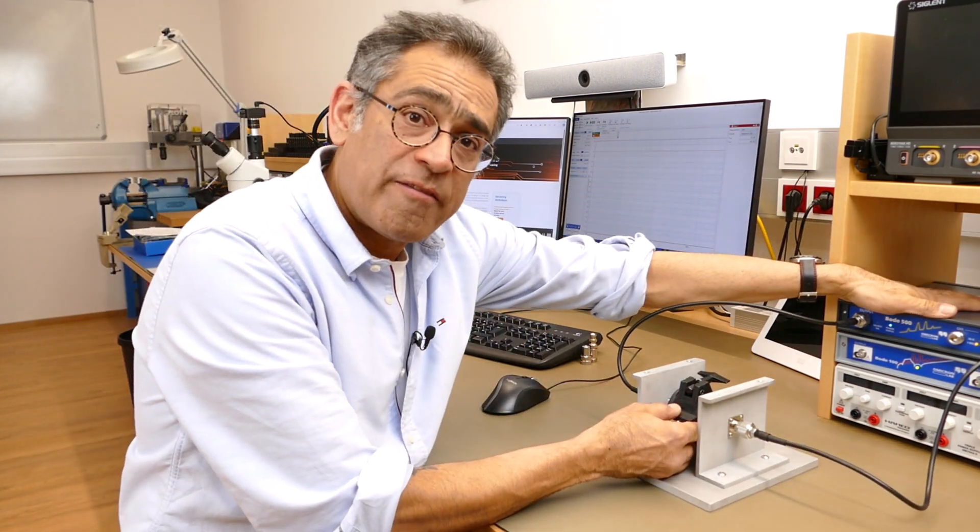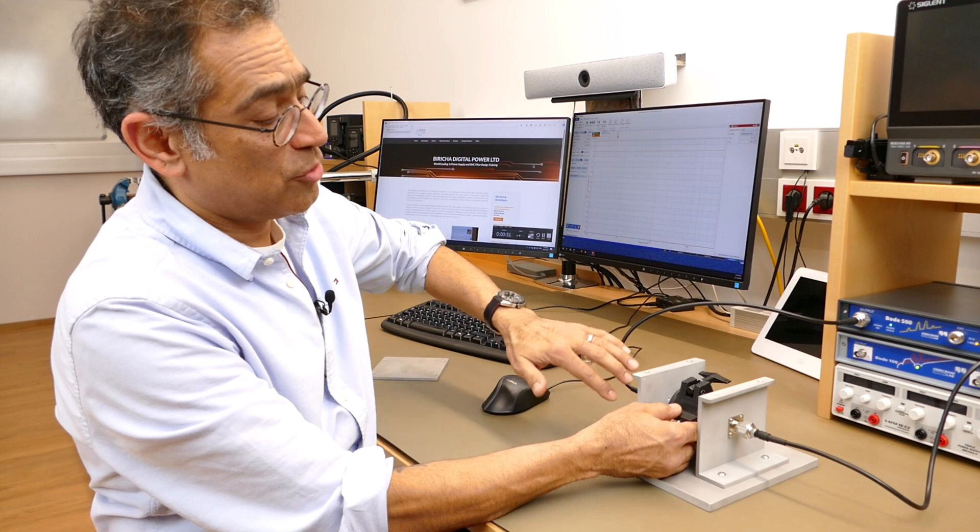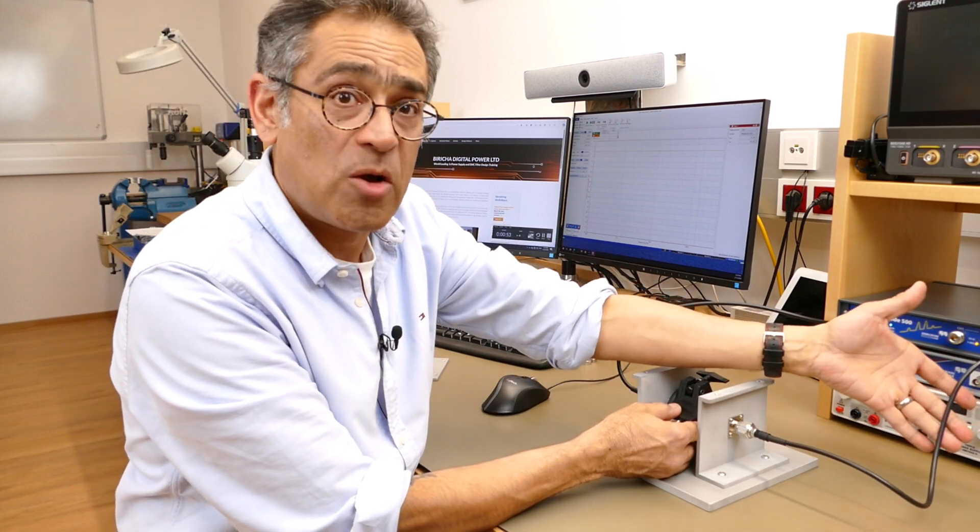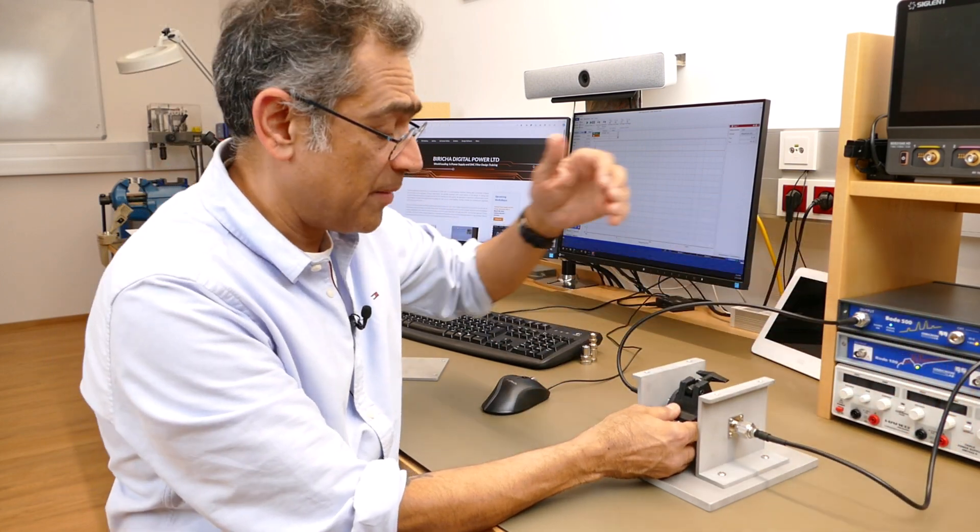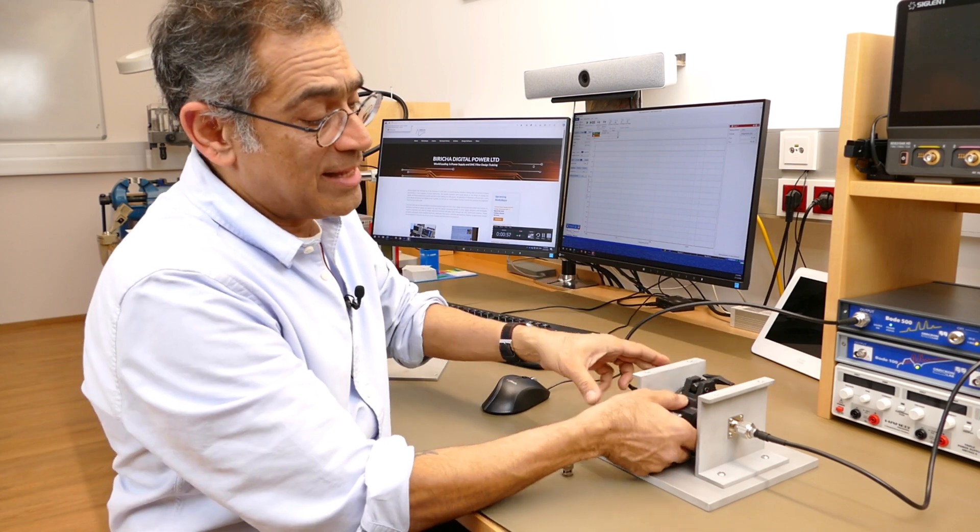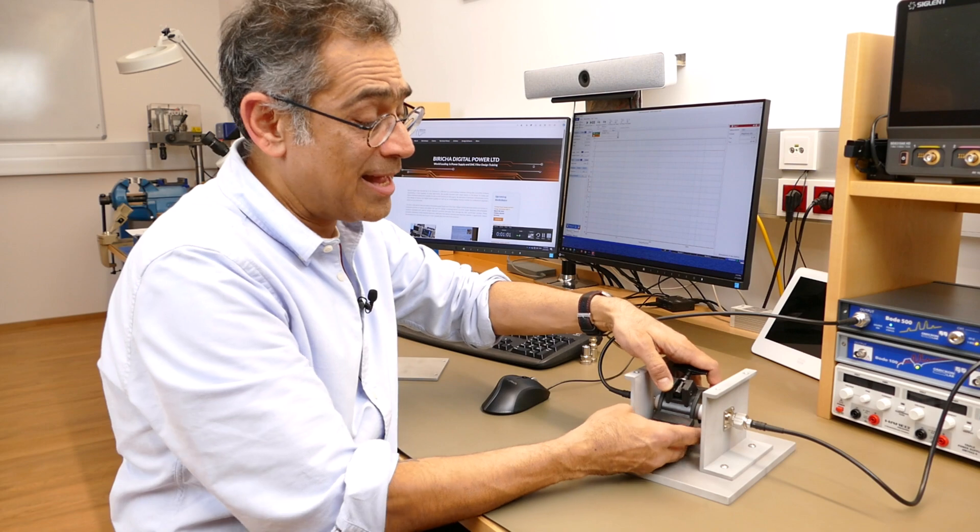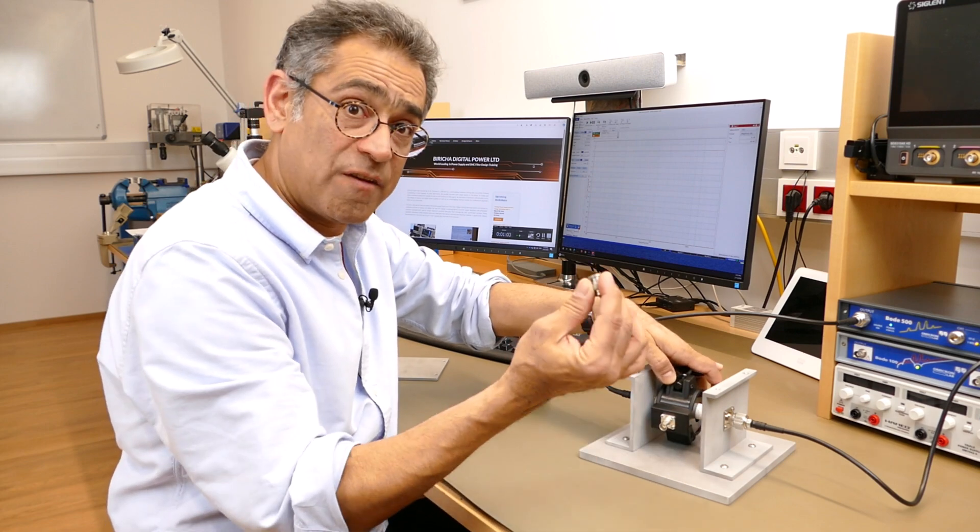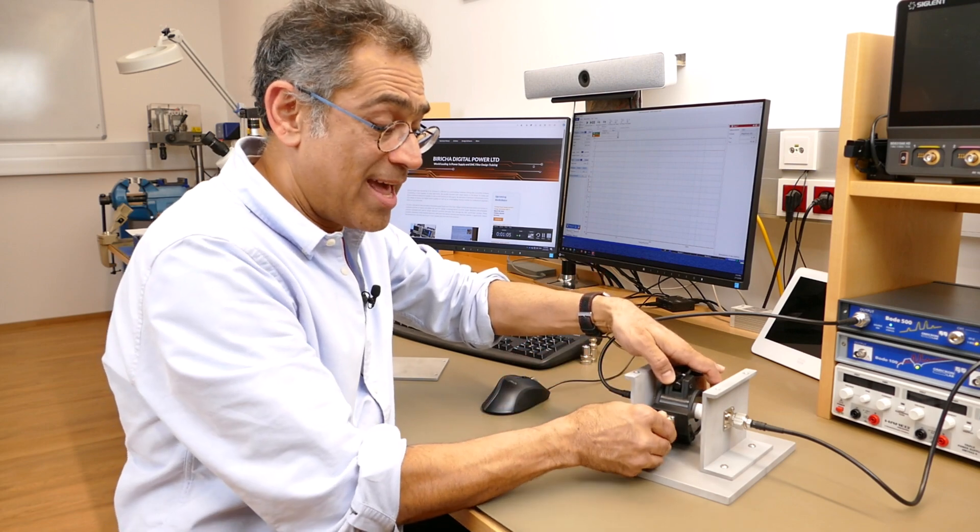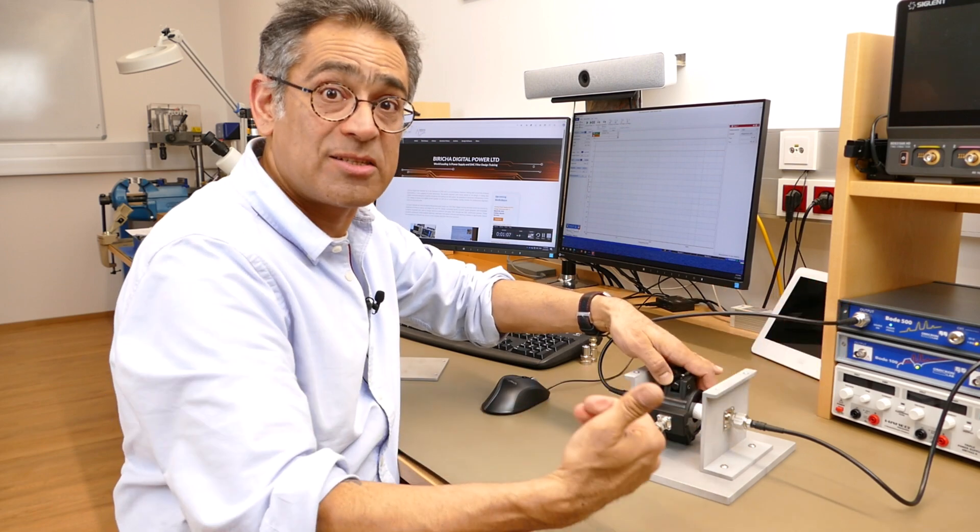And now what's happening here is that I have got a Bode 500, it is injecting a signal through this and then it's measuring what is coming through. Now please recall that this current clamp is going to be connected to a spectrum analyzer, and therefore you have to put a 50 ohm terminator on the end of this to emulate the presence of a spectrum analyzer.